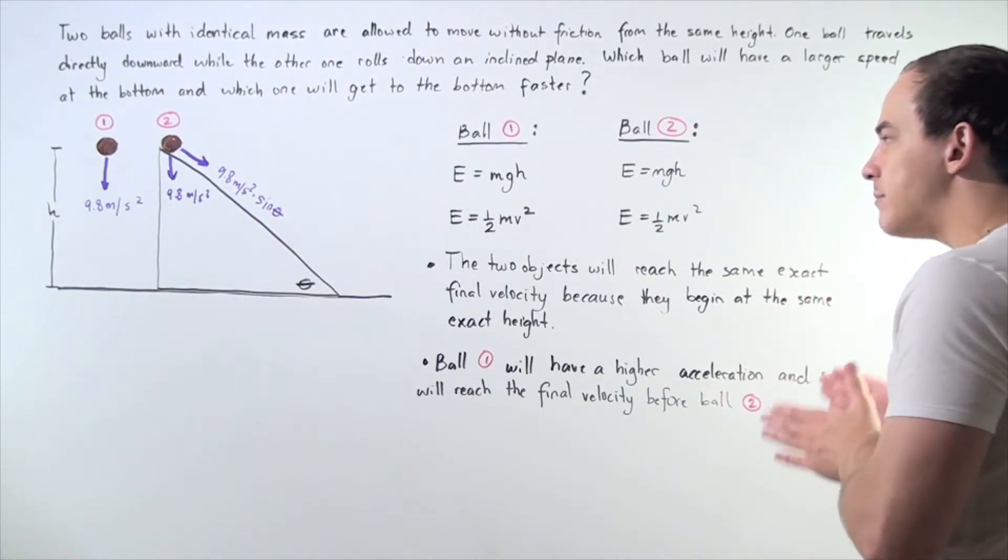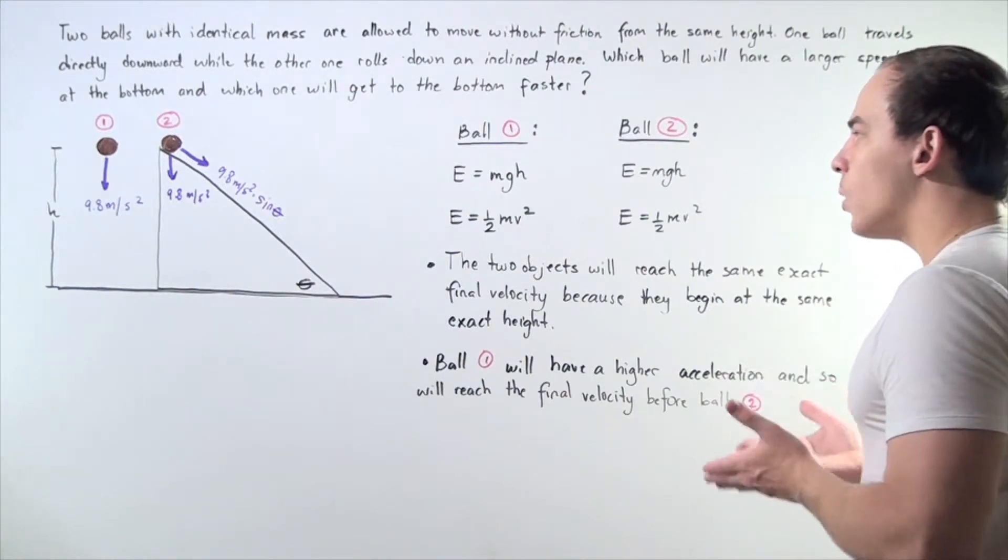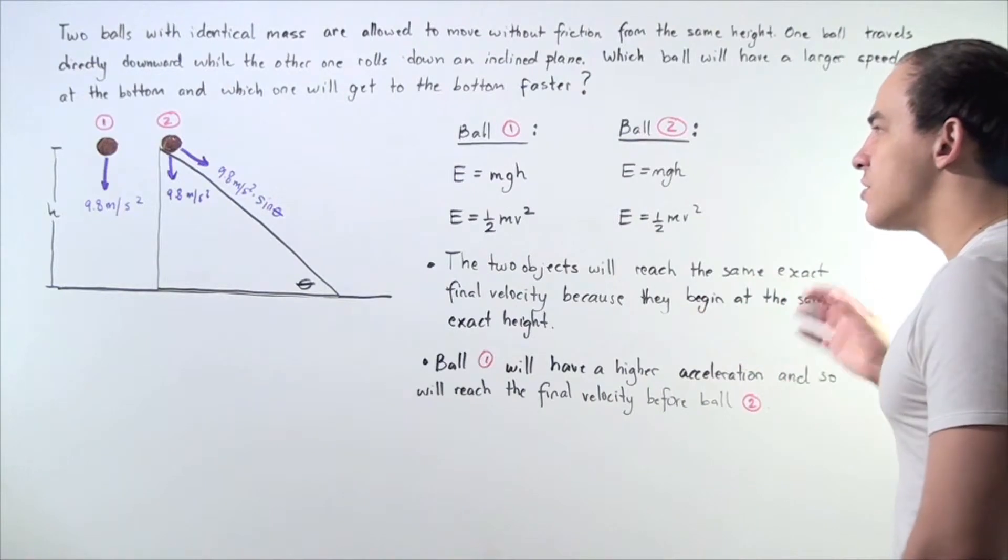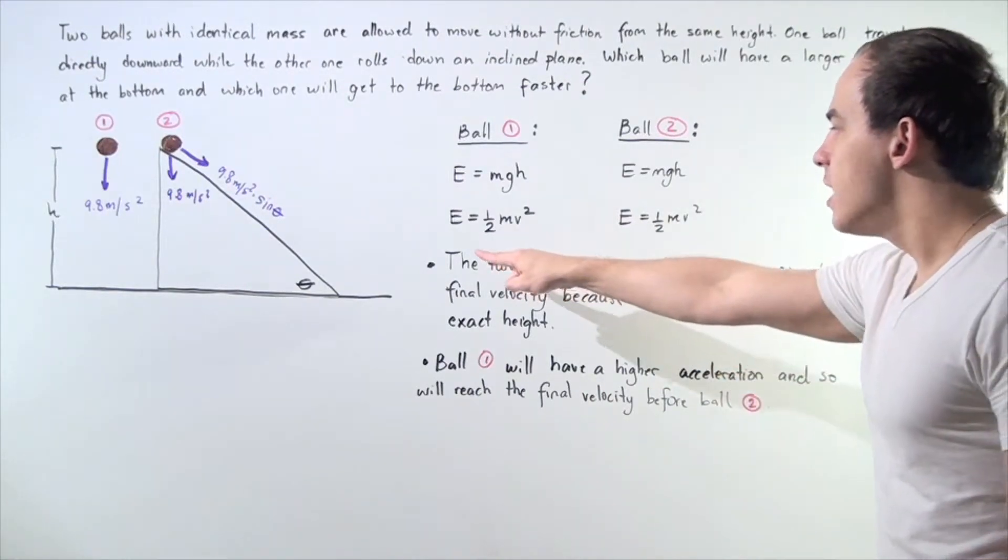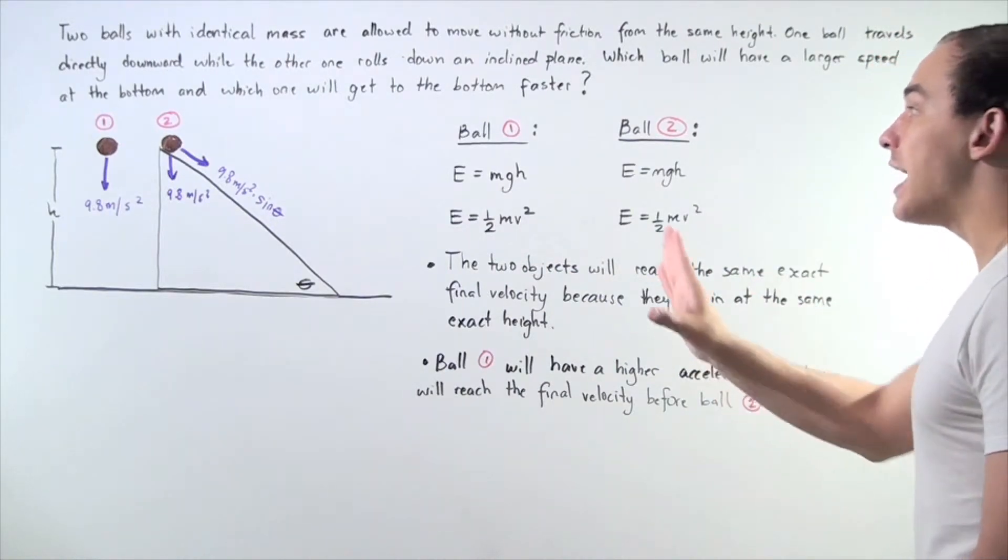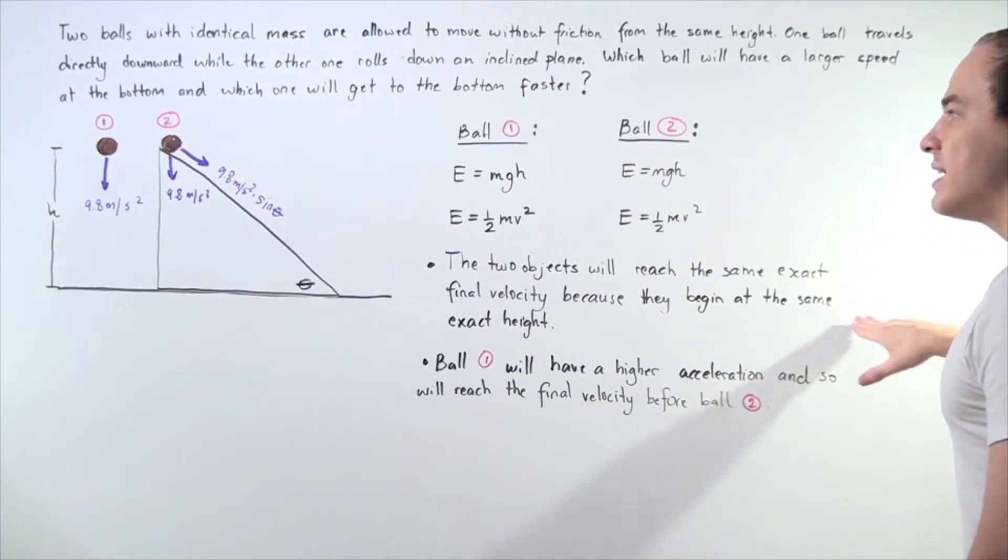So, because the objects begin at the same exact height and under the same conditions, meaning they both have initial velocity of zero, at the end, they will have the same exact velocity. So, once again, the two objects will reach the same exact final velocity, final speed, because they will begin at the same exact height above the ground.